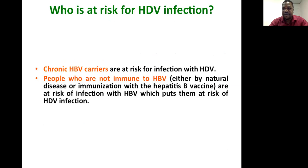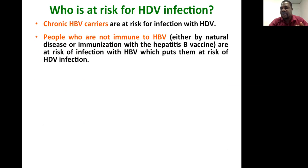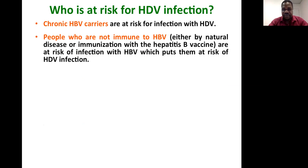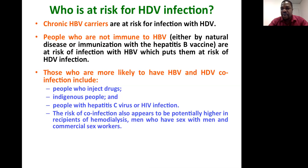Who is at risk for hepatitis D? All chronic carriers of hepatitis B infection are at risk, because if they did not contract hepatitis D at the same time as hepatitis B, they may develop a super infection later. People who are not immune to hepatitis B are also at risk, as they might develop a co-infection. Those more likely to have hepatitis B and D co-infection include people who inject drugs, and people with hepatitis C or HIV infection.